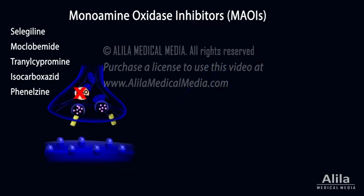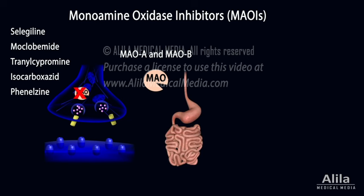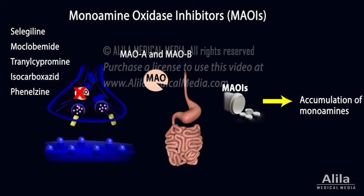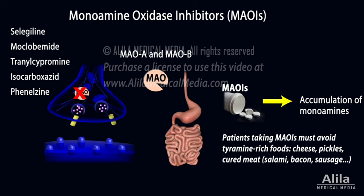MAOIs inhibit the monoamine oxidase enzymes MAO-A and MAO-B, responsible for degradation of serotonin, norepinephrine, and dopamine. Because these enzymes are also present in the digestive system where they break down monoamines in food, use of MAOIs is usually avoided due to adverse drug-food interactions. Patients taking MAOIs must avoid tyramine-rich foods such as cheese, pickles, and cured meat, as accumulation of this monoamine can cause a rapid and dangerous rise in blood pressure.